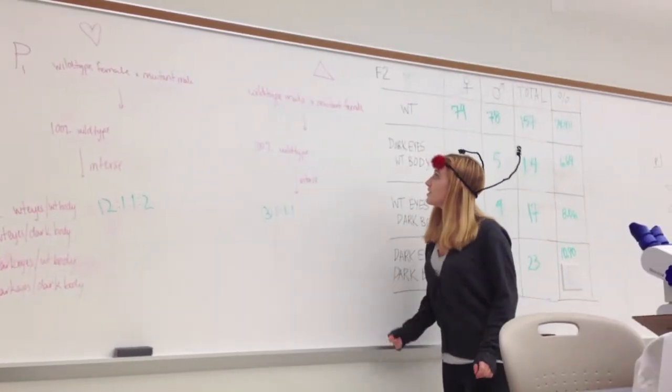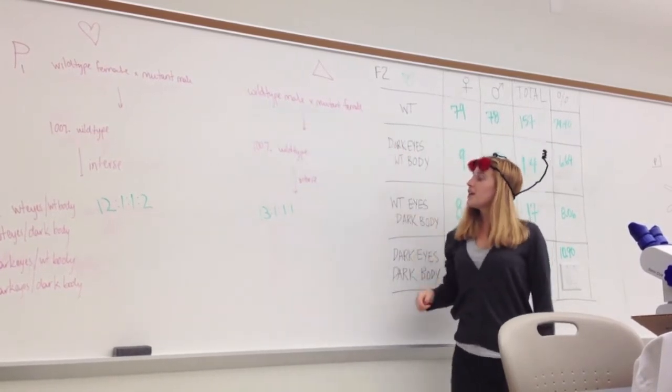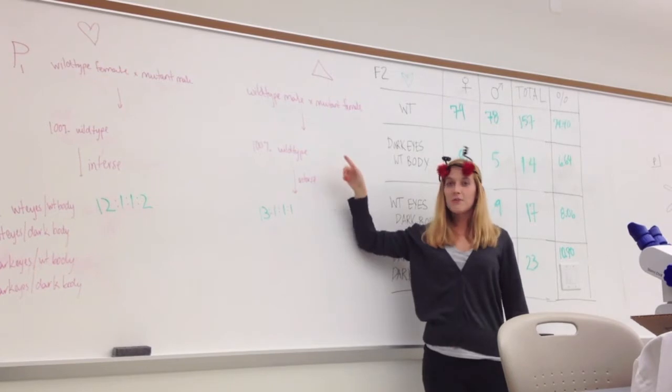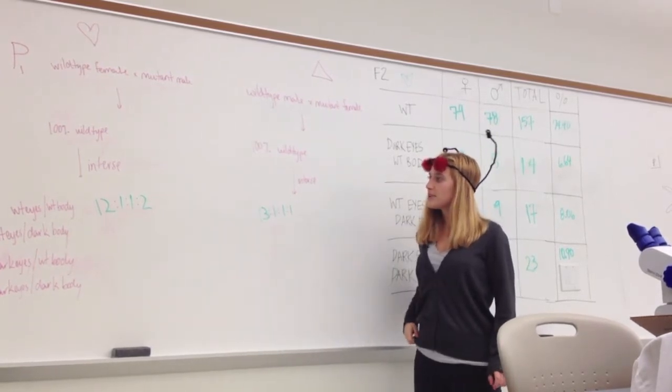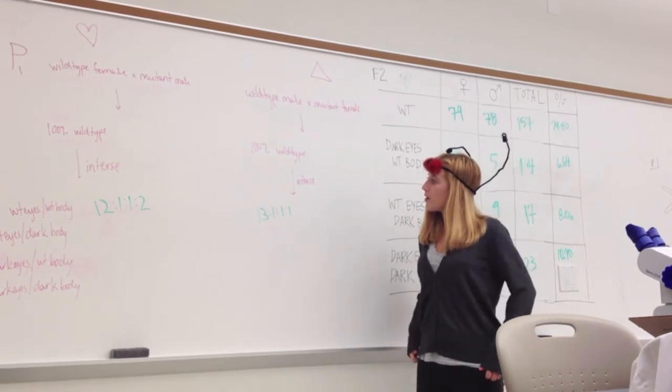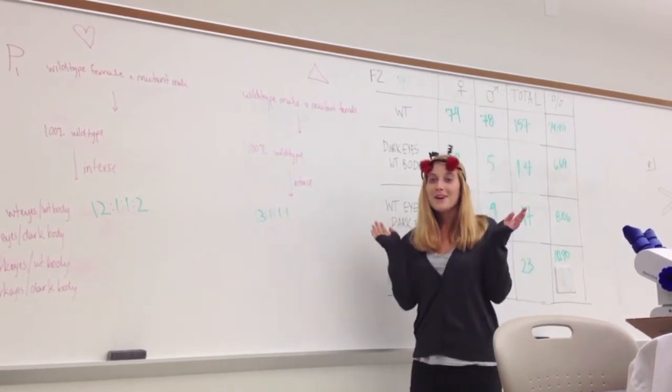In our delta cross, we crossed a wild type male and a mutant female. And again, we had 100% wild type flies. We crossed these together, and then we came up with a 13 to 1 to 1 to 1 ratio. What could this mean?